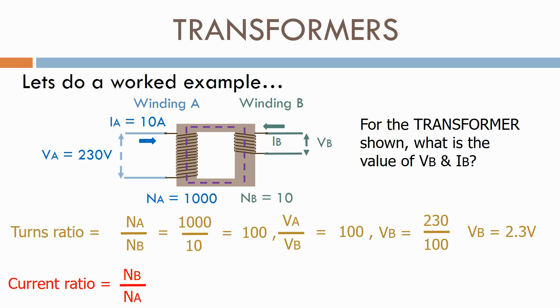The current ratio is the inverse of this. Therefore, the current ratio equals NB over NA. Equals 10 divided by 1000, which equals 0.01.